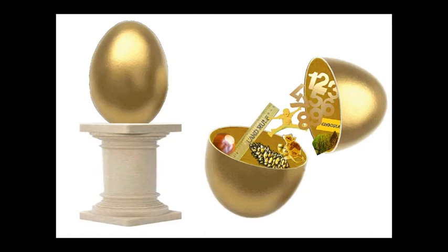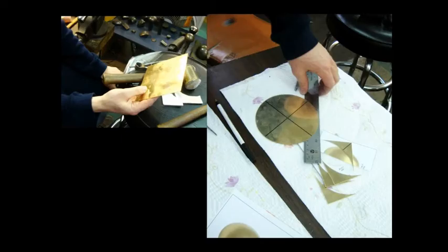We took a sheet of 18 karat gold that was five and one eighth inches by 20 gauge, which is just under a millimeter in thickness, and cut it into a disc. We would be using the same technique Paul Revere used to create his teapots. It would be hammered into the egg form. It would take many hours. We had a month. In reality, we should have had three months. This was a totally impossible project.